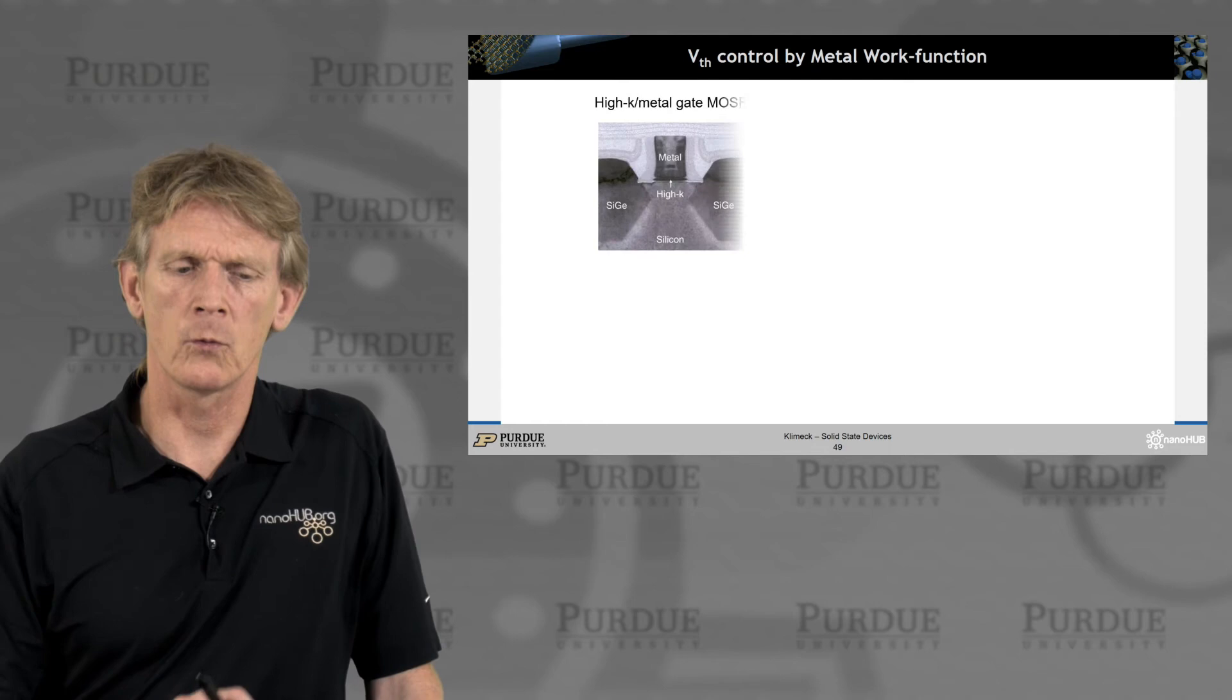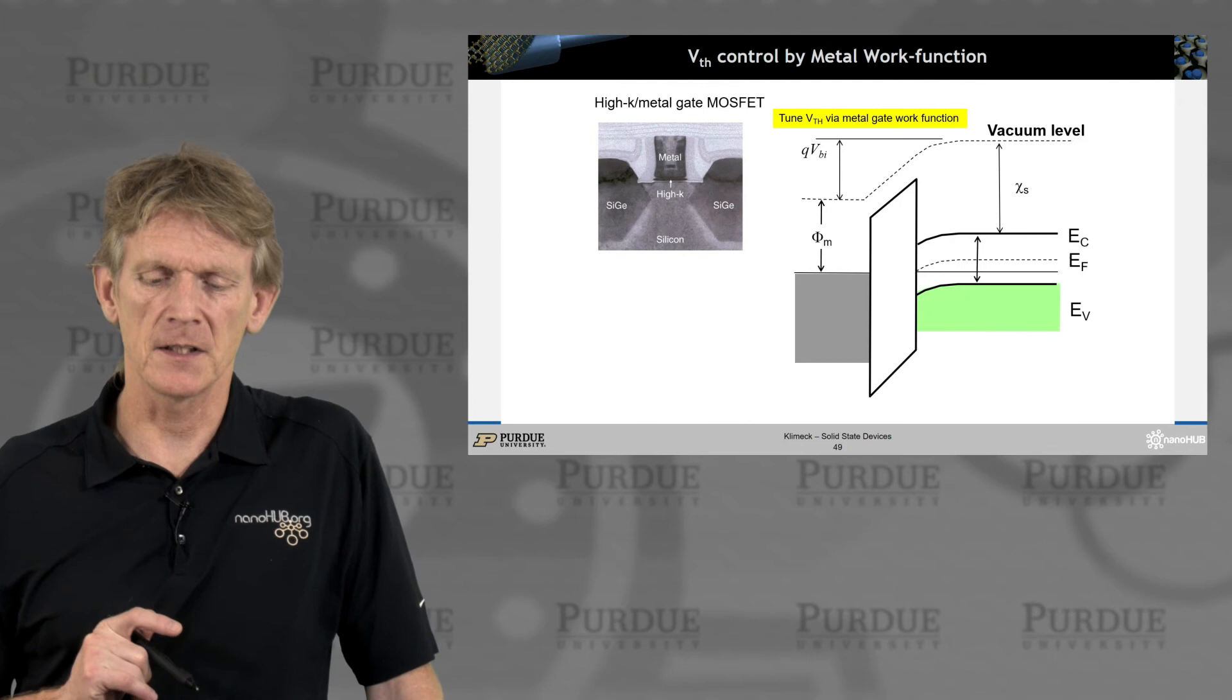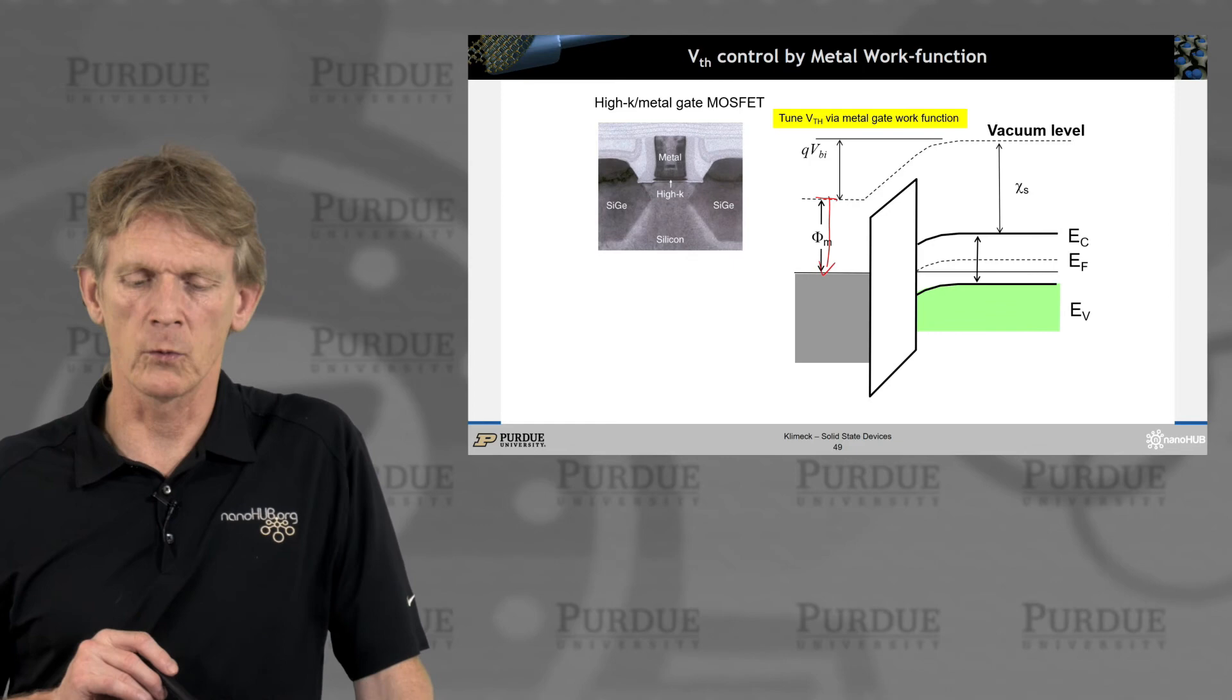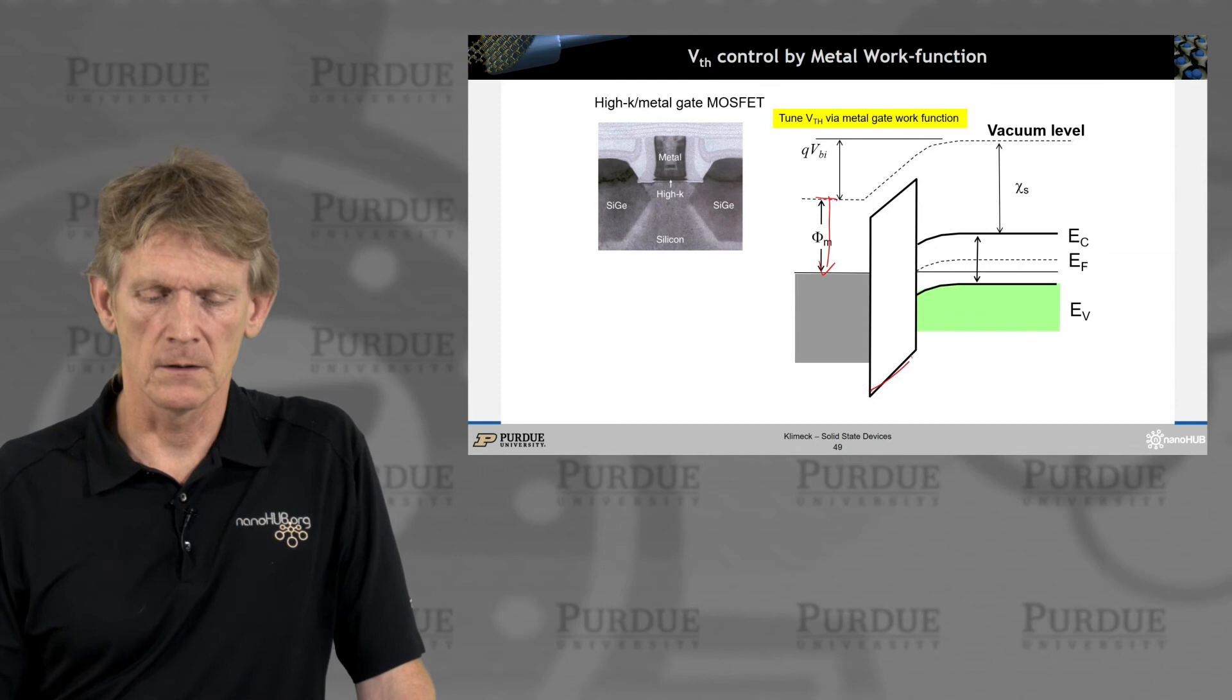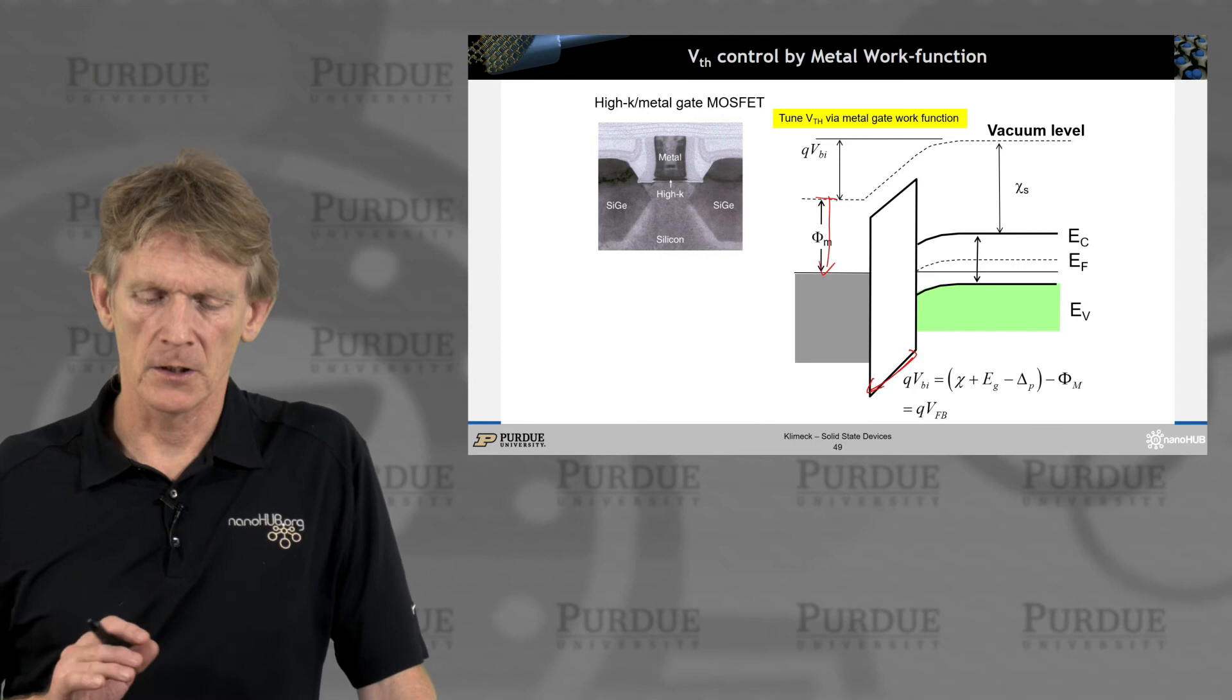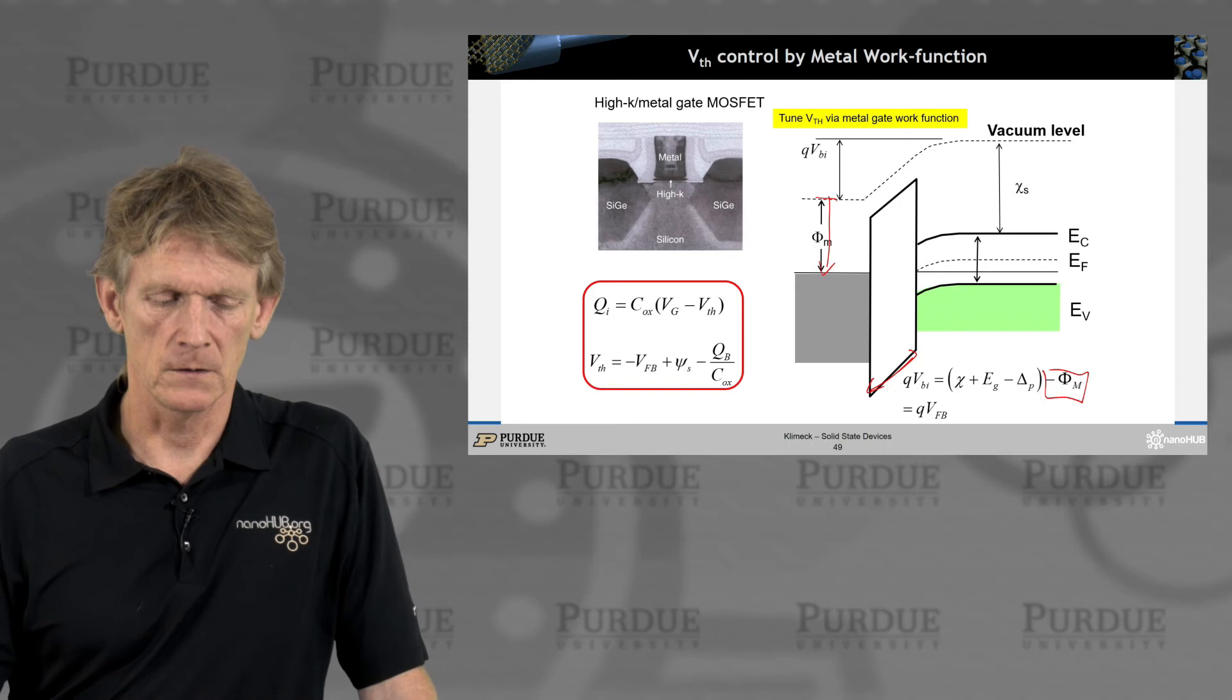You can also control the threshold by the metal work function. We talked about that, right? Earlier, you can shift the threshold voltage. And here we go. That's the same sketch as what we had before. By choosing your threshold, your metal work function, you can shift your circuit up to, say, higher threshold voltages to compensate effects due to smaller oxides, etc., right? So you can play with this work function over here in order to control the threshold voltage a bit more. Good. We've seen all these expressions.